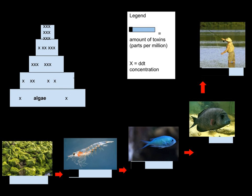Biomagnification, also known as bioamplification or biological magnification, is the increasing concentration of a substance, such as a toxic chemical, in the tissues of tolerant organisms at successively higher levels in a food chain.